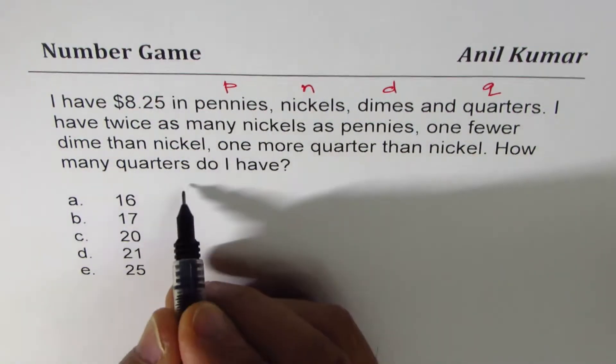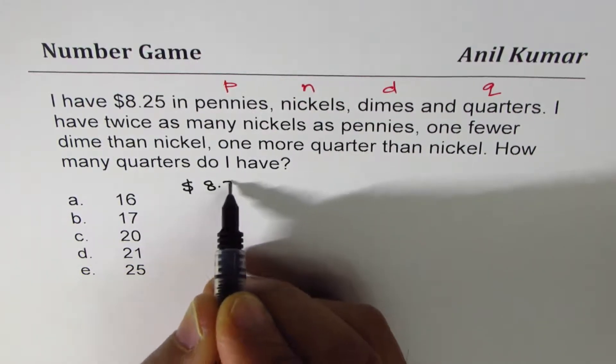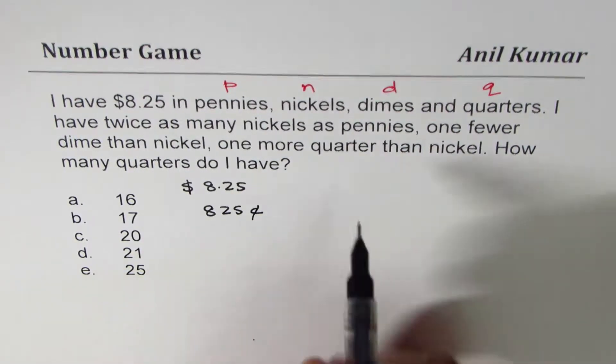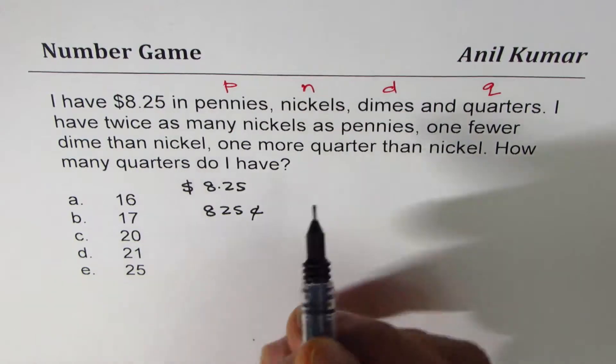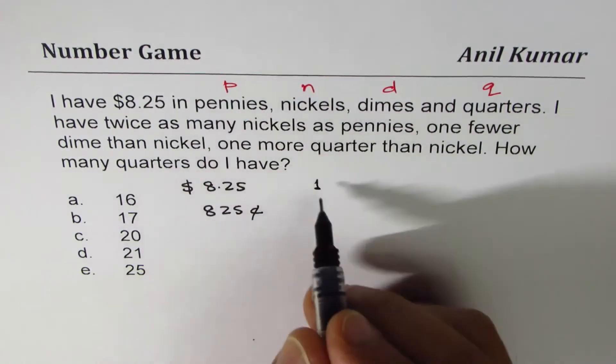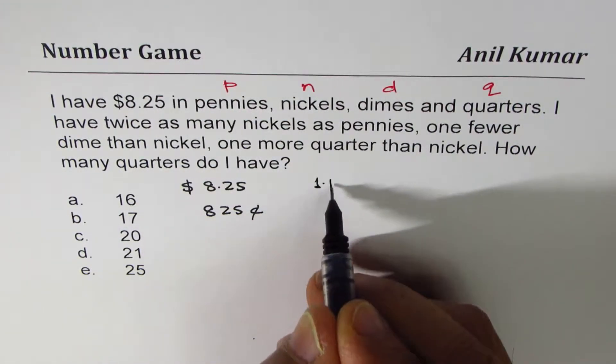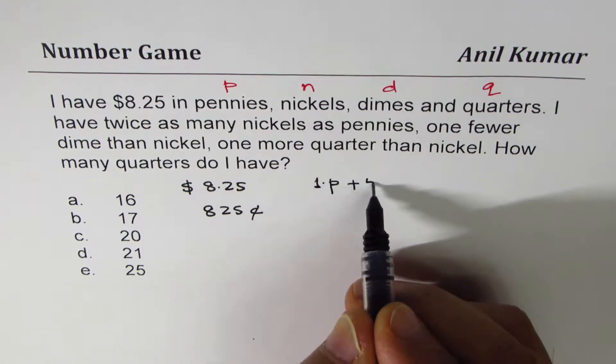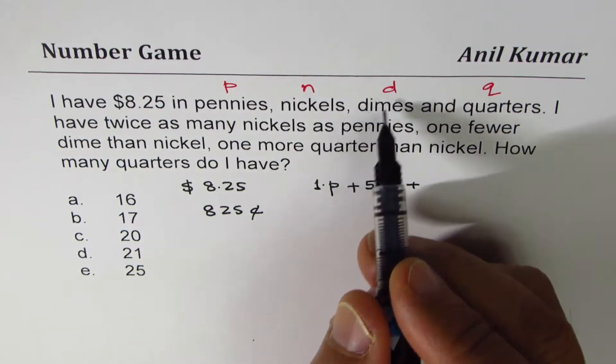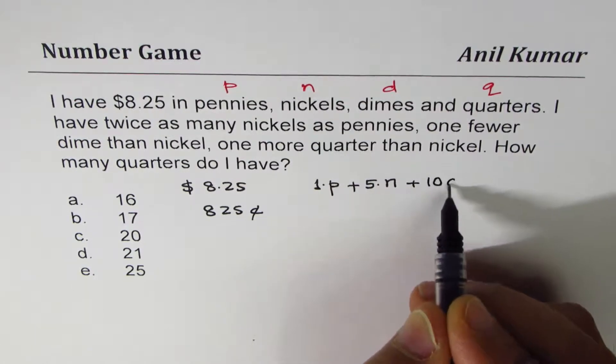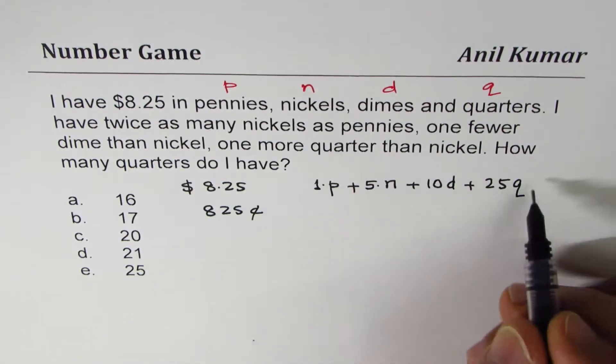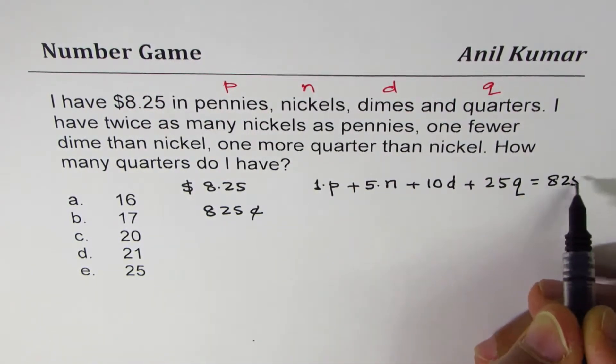We'll write the money in cents. We have $8.25 and that means we have 825 cents. We'll avoid working in decimals. If I have P pennies, then I have $0.01, so I'll call this as one for the value of each penny. So 1 times P plus nickels is 5 cents, so 5 times N, plus dimes is D which is 10, 10D plus quarters is 25, so 25Q. All this amounts to 825.